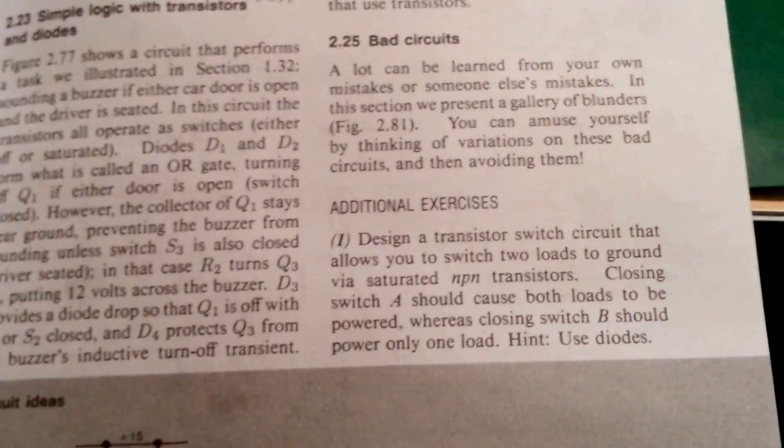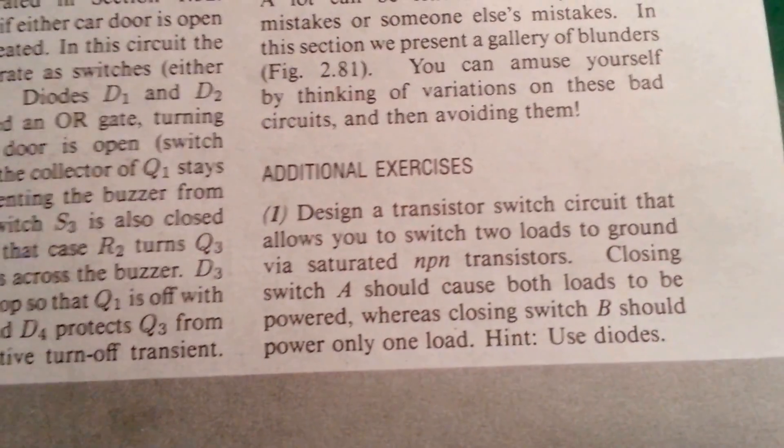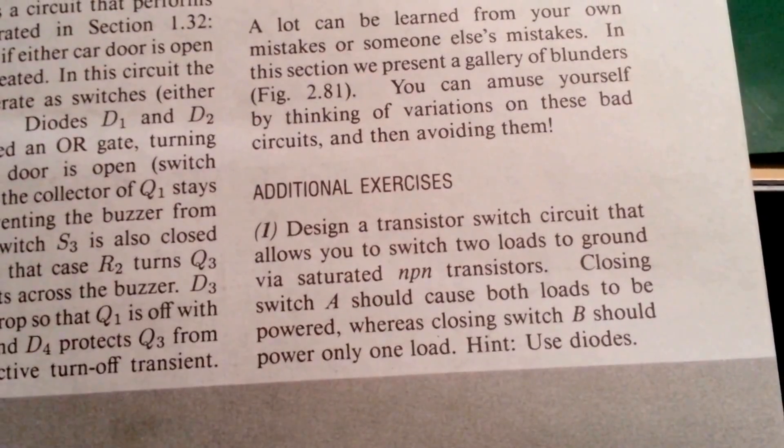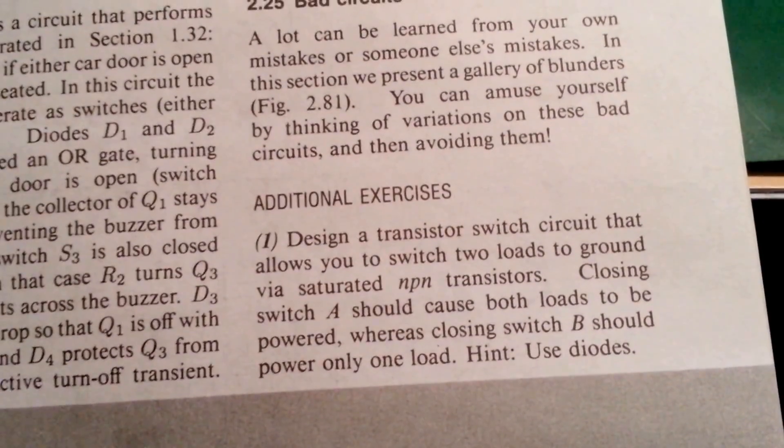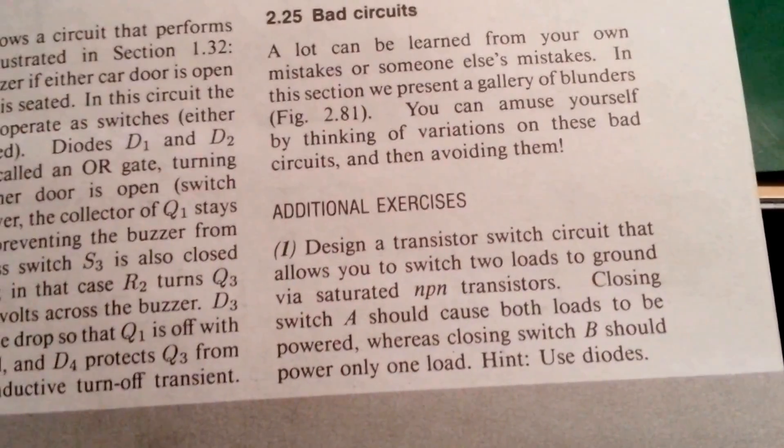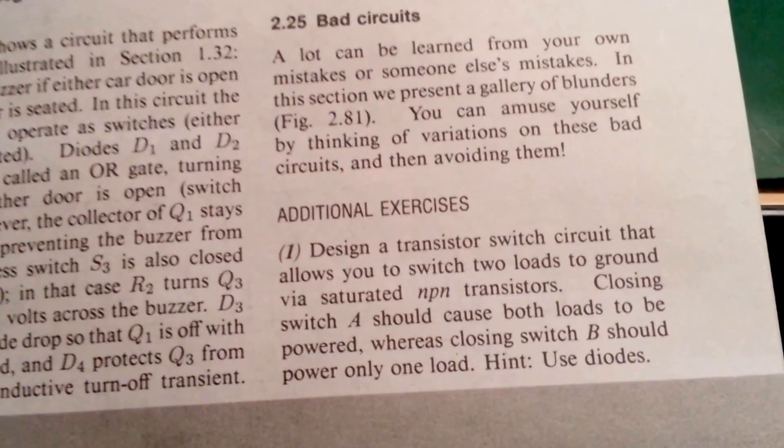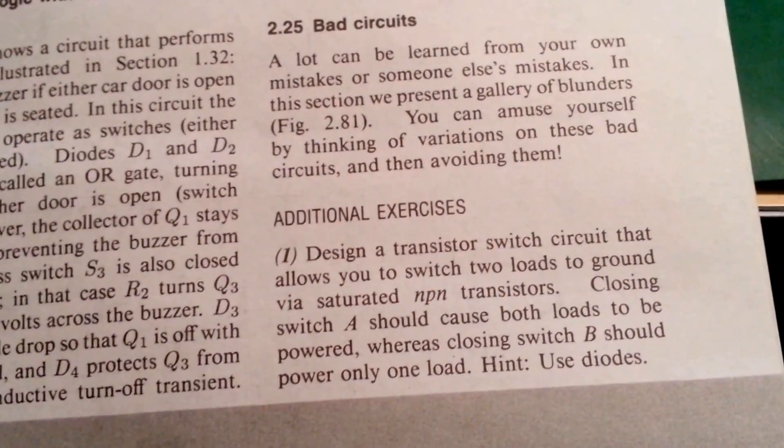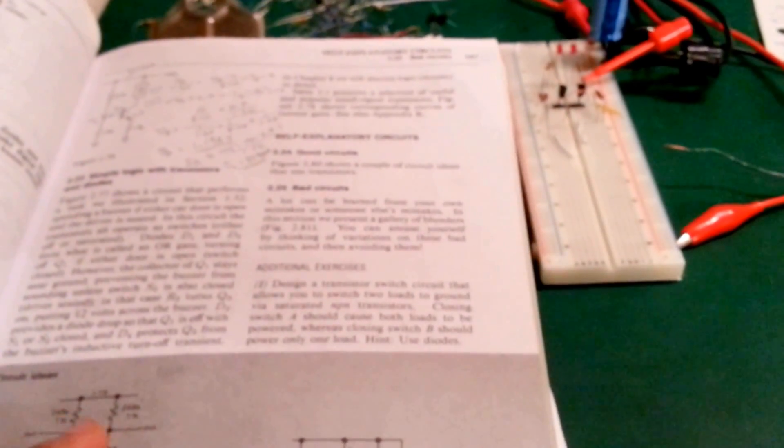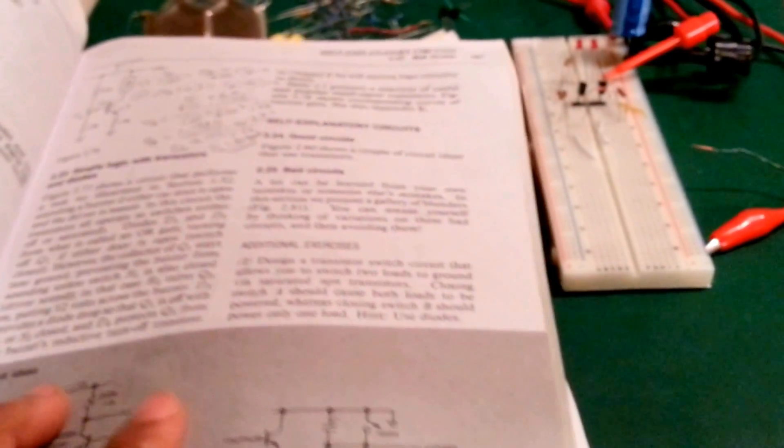The first question says: design a transistor switch circuit that allows you to switch two loads to ground via saturated NPN transistors. Closing switch A should cause both loads to be powered, whereas closing switch B should power only one load. Hint: use diodes. So this is the application of using both transistors as switches and also using diode logic to implement the solution. Anyway, I'll show you my solution and how I came up with it.